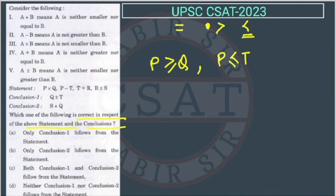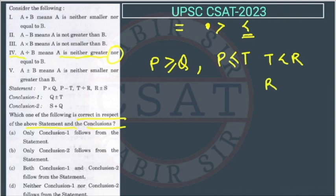The third statement is T divided by R — 'divided by' means neither greater nor equal, so T is strictly less than R (not equal, as that is explicitly excluded). The fourth statement is R plus-minus S — 'plus-minus' means neither smaller nor greater, so R is equal to S.